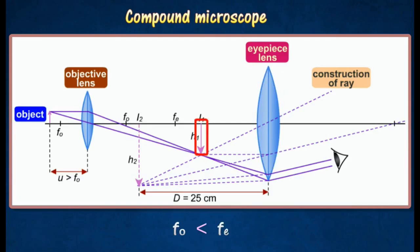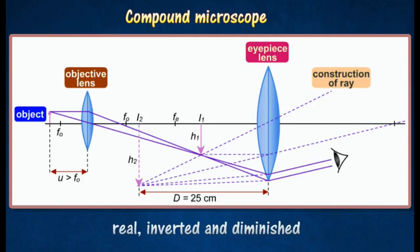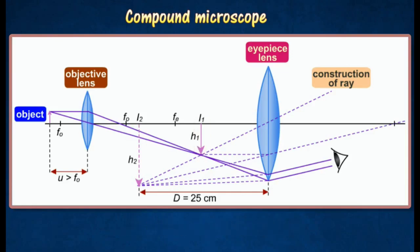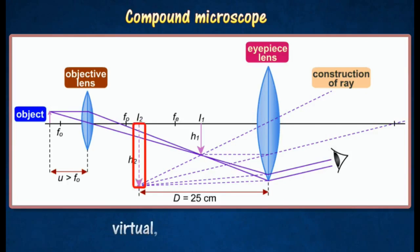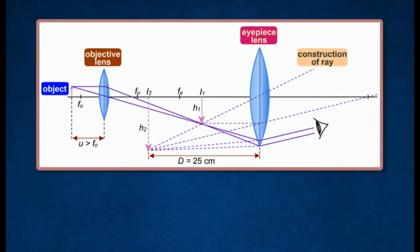The object is placed at a distance u greater than FO from the objective to form an image I1, which is real, inverted, and magnified at its focal point FO. Image I1 becomes the object for the eyepiece. The eyepiece is adjusted until I1 is within its focal length, causing it to act as a magnifying glass to produce final image I2, which is virtual, inverted, and magnified.